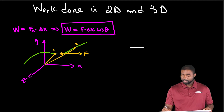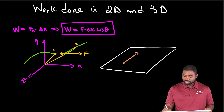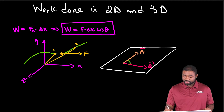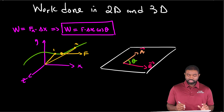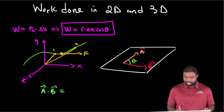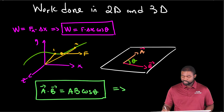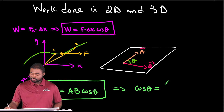Suppose we have a plane, and in that plane we have two vectors: vector a and vector b. The angle between a and b is theta. The dot product a dot b is simply defined as the magnitude of a multiplied by the magnitude of b, multiplied by the cosine of the angle between the two vectors. This means the cosine of the angle between a and b can be given by a dot b divided by ab.